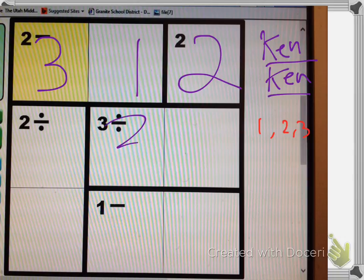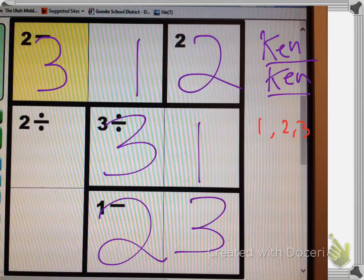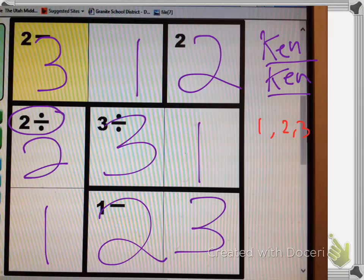So we've got to put a 3 here and a 1 here, which automatically tells me this has to be a 3 and this has to be a 2 and this has to be a 1 and this has to be a 2. 2 divided by 1 is 2. Blada bling, blada bloop. And there you go, as Mr. Colby would say.